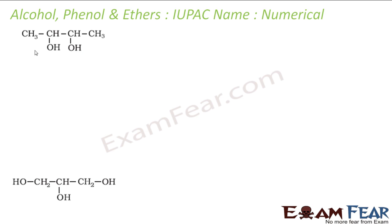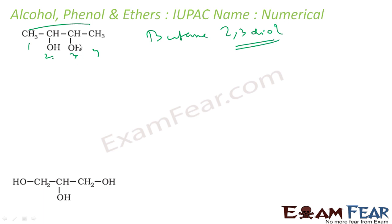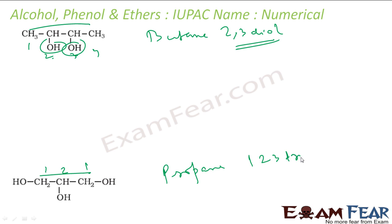Let's try to name this compound. The longest chain is symmetrical, so I can number either way: 1, 2, 3, 4 — it will be butane-2,3-diol. The OH groups are my primary functional group, written last. And for this next one, I number 1, 2, 3 — it will be propane-1,2,3-triol. The OH groups are written as the primary function at the end.